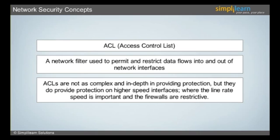In addition, ACLs are also used to restrict updates for routing from network peers, and they can be instrumental in defining flow control for network traffic. Further, ACLs for routers are not as complex or robust, but they do offer a significant amount of firewall capability.